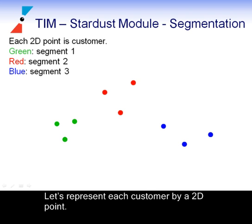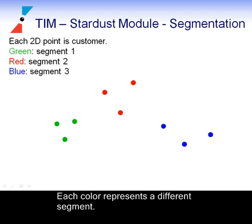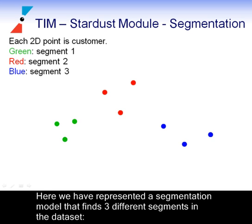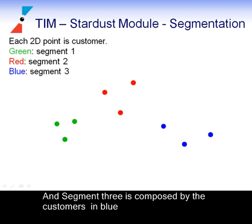We will now see how to create a segmentation model. Let's represent each customer by a 2D point. A segmentation model is a model that assigns a colour to each of these points. Each colour represents a different segment. Here, we have represented a segmentation model that finds three different segments in the dataset. Segment 1 is composed by the customers in green, segment 2 by the customers in red, and segment 3 by the customers in blue.